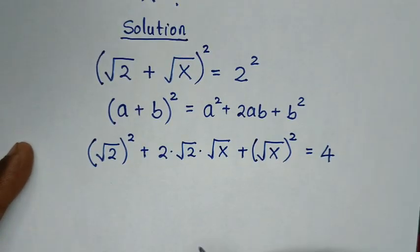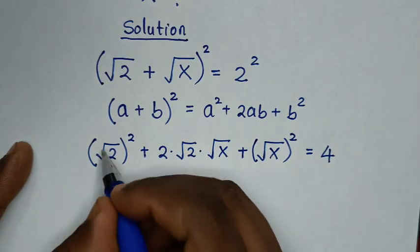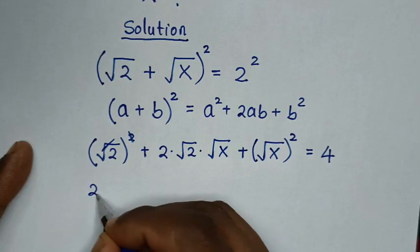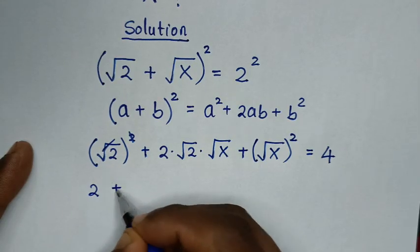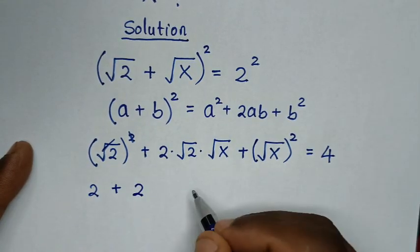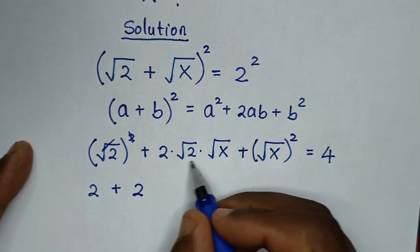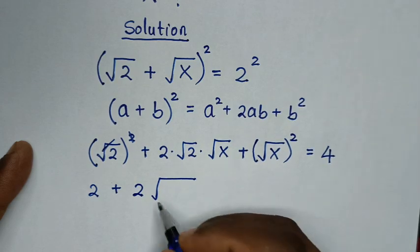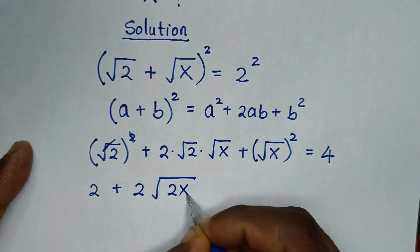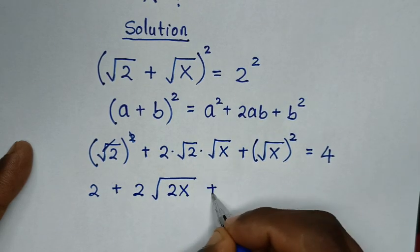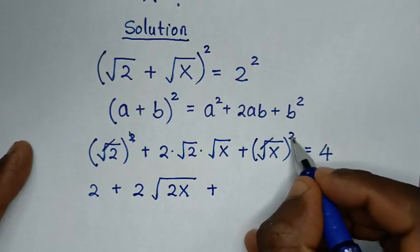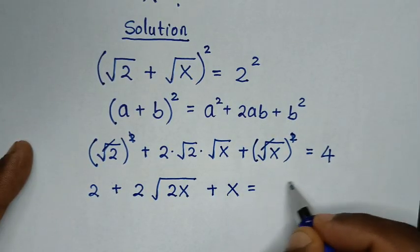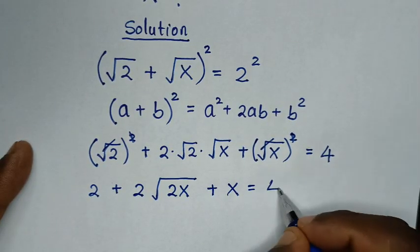In the next step, we simplify: the square root cancels the square, so (√2)² = 2, then plus 2 times √(2x), and (√x)² = x. So we have: 2 + 2√(2x) + x = 4.